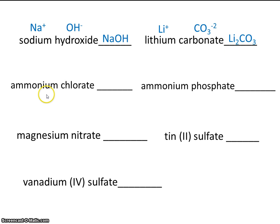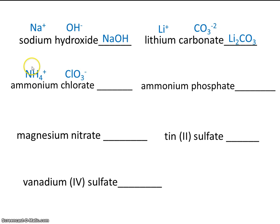Ammonium is a positive polyatomic ion found on the back of your periodic table — it's a bit tricky to find. Chlorate is ClO₃ minus. Since both have charges of magnitude 1, we need 1 ammonium and 1 chlorate. So the formula is NH₄ClO₃.